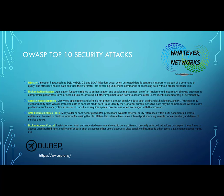Number three is sensitive data exposure. Many web applications and APIs do not properly protect sensitive data such as financial or healthcare information. Attackers may steal or modify weakly protected data to conduct credit card fraud, identity theft, and other crimes. Sensitive data may be compromised without extra protection, so we'd suggest using encryption, SSL, security stripping, and encrypted passwords. For example, if you put Wireshark on a network and did packet sniffing, plain text passwords could easily be picked up between points A and B, allowing an attacker to steal your identity.